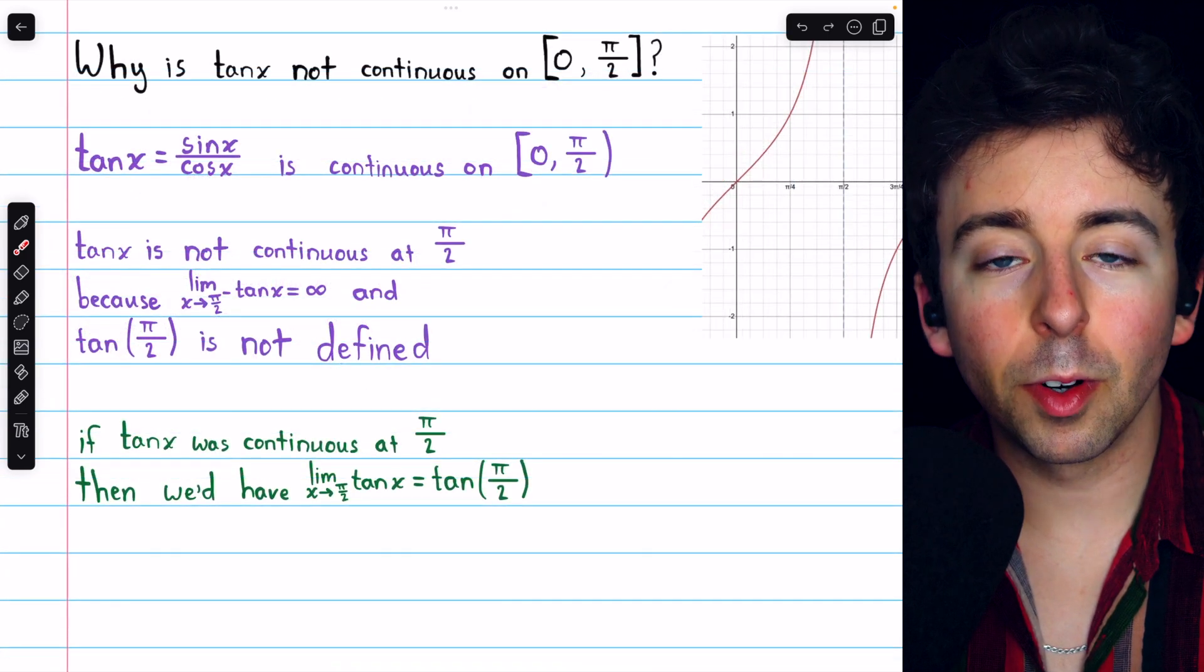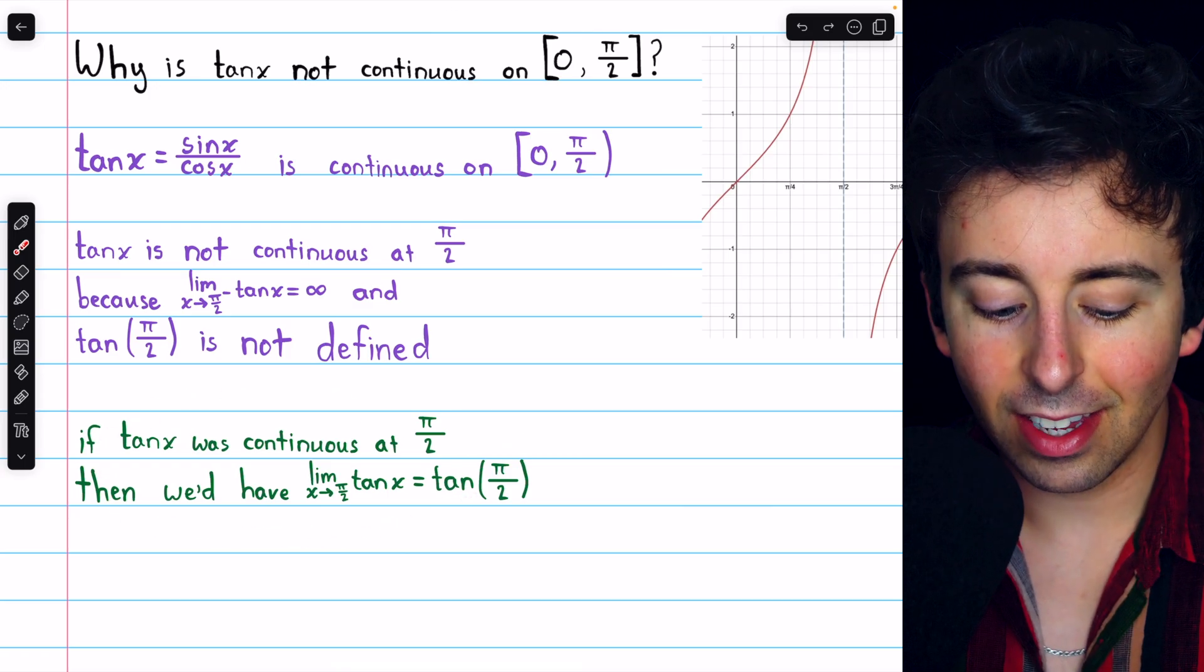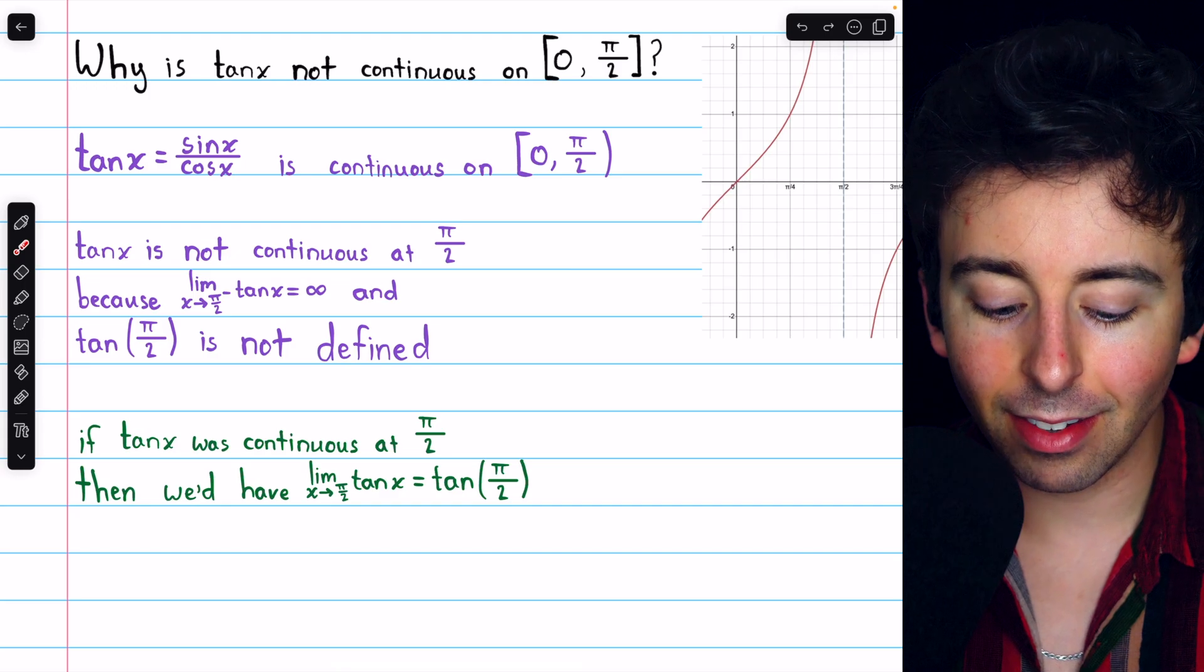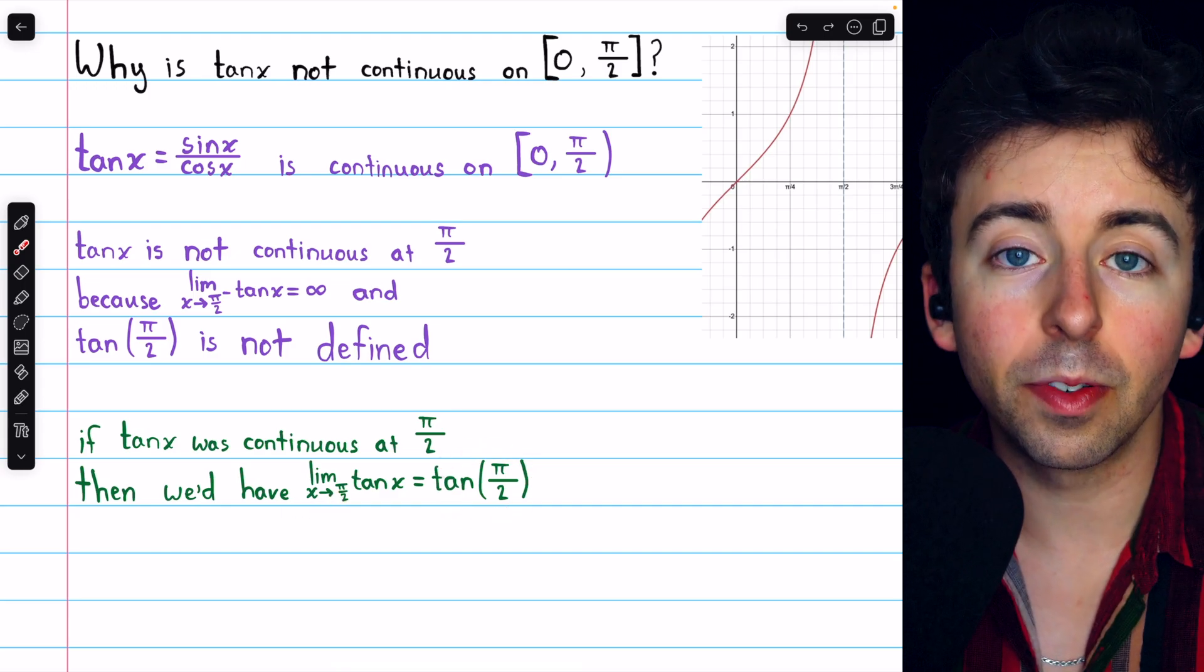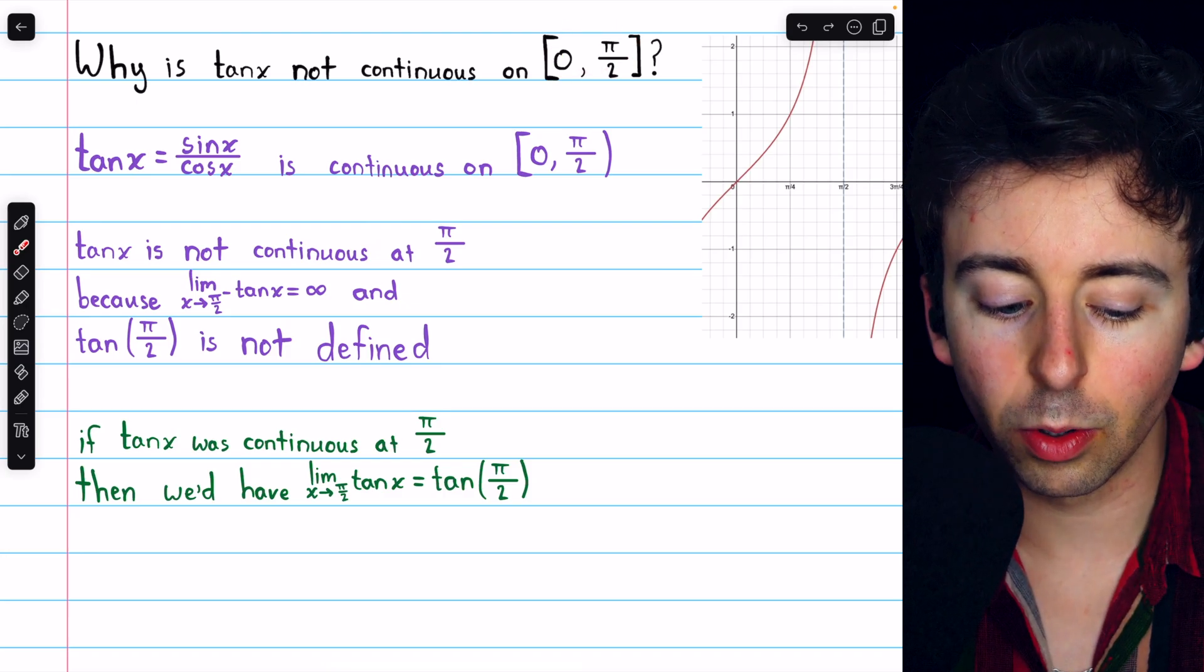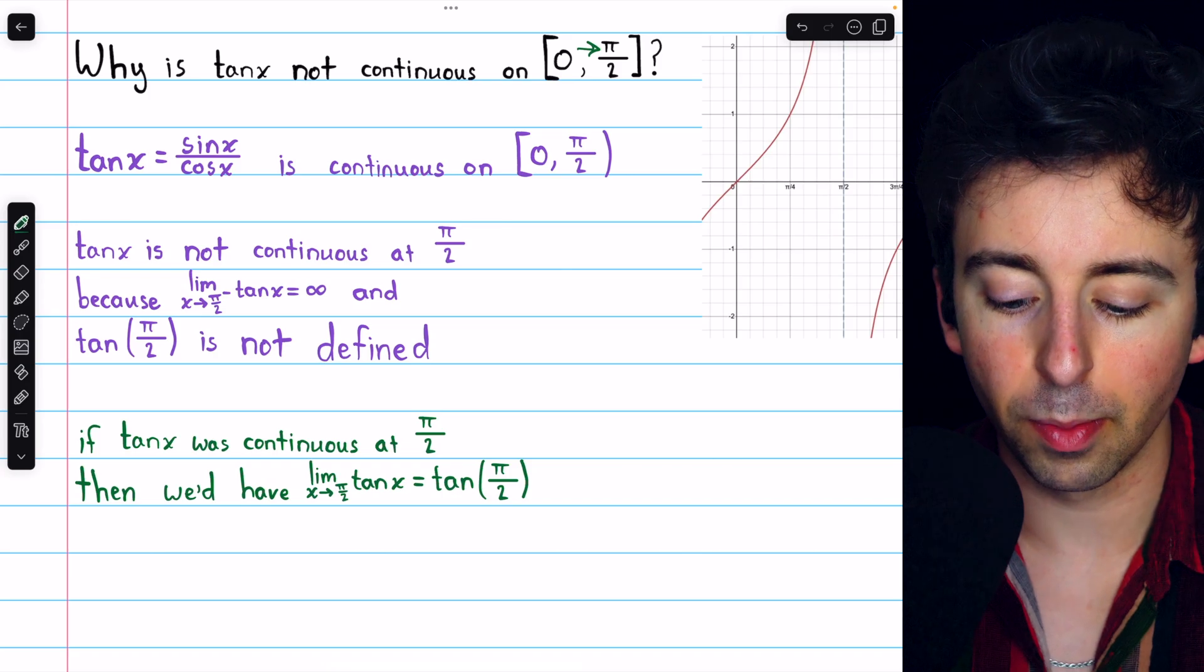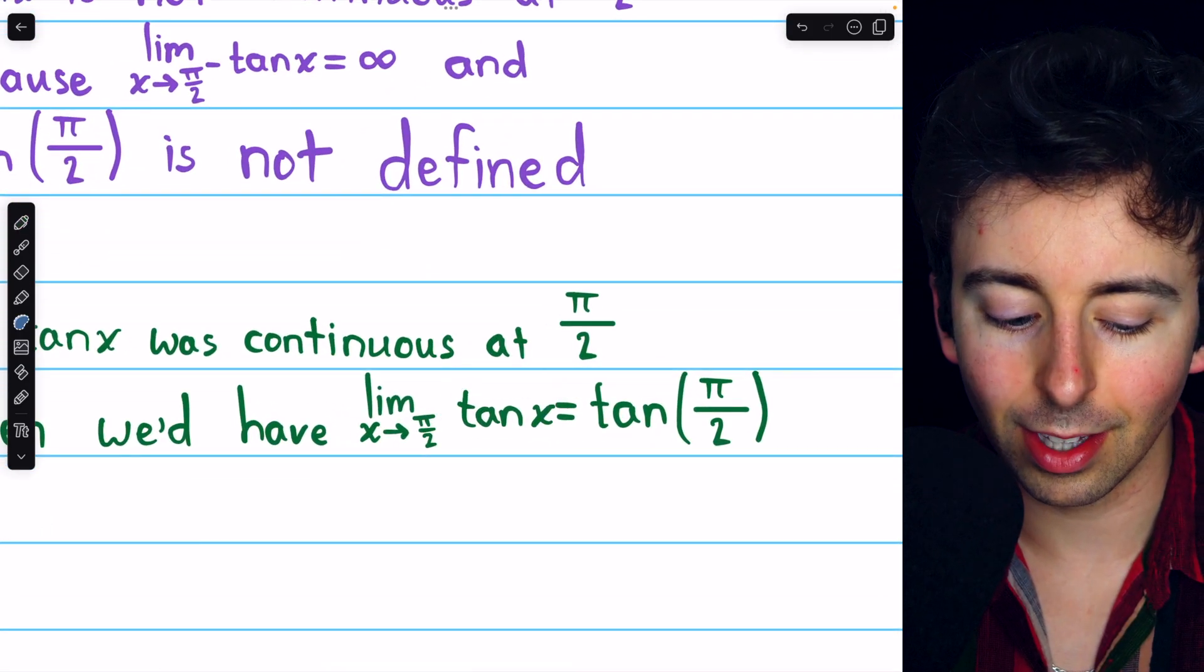Specifically, what it would mean for tan x to be continuous at pi over 2 is this. We would need the limit of tan x as x approaches pi over 2 to equal the value of tangent at pi over 2. And in particular, for this interval, since it only makes sense to approach pi over 2 from the left, we would have to consider that specifically with this limit, the limit as x approaches pi over 2 from the left.